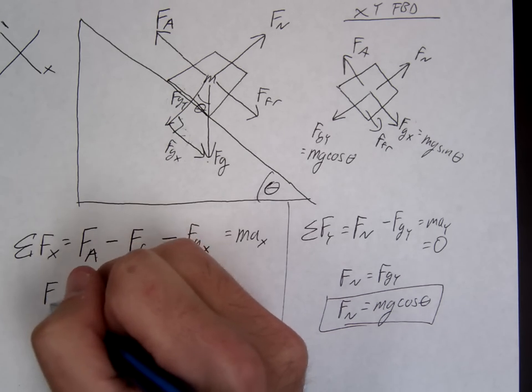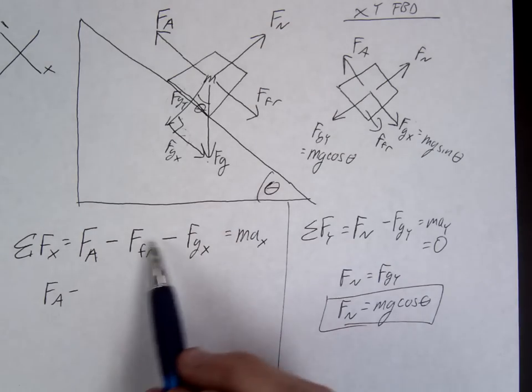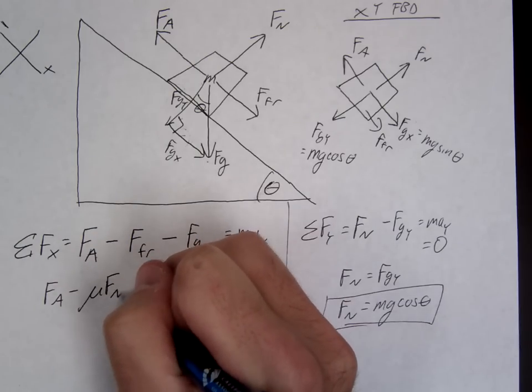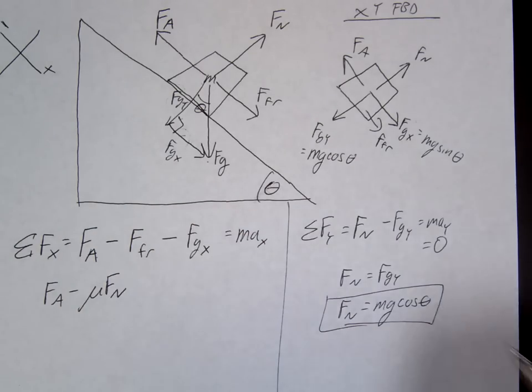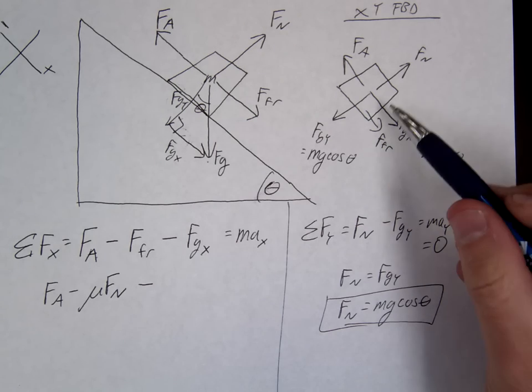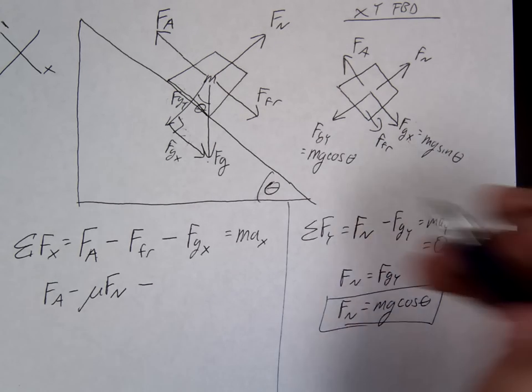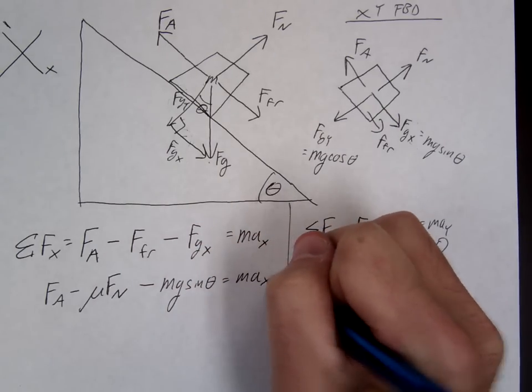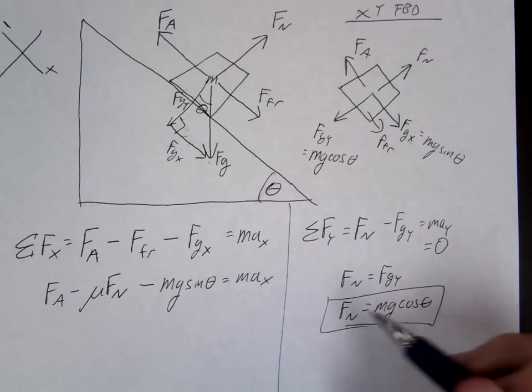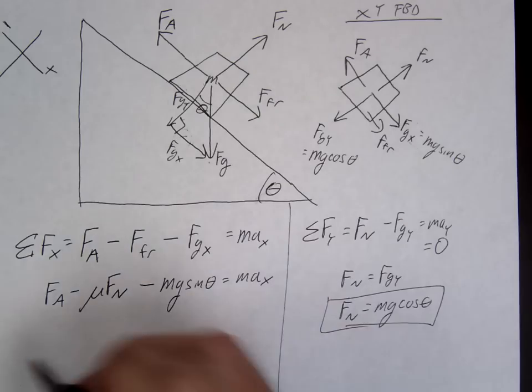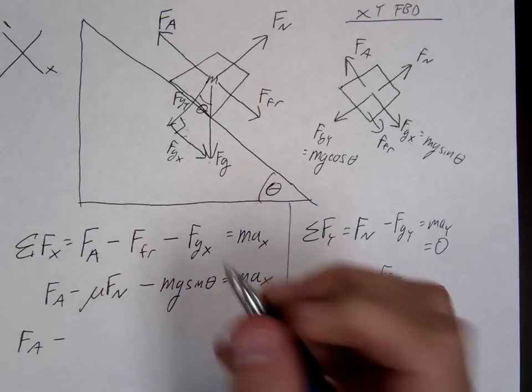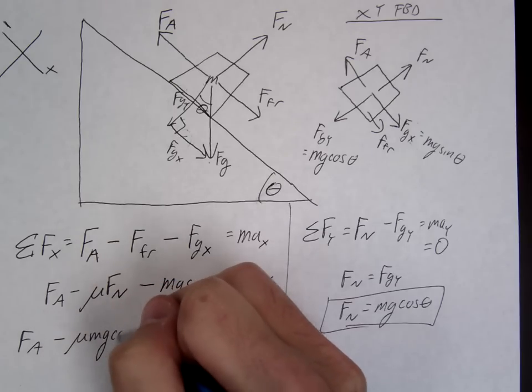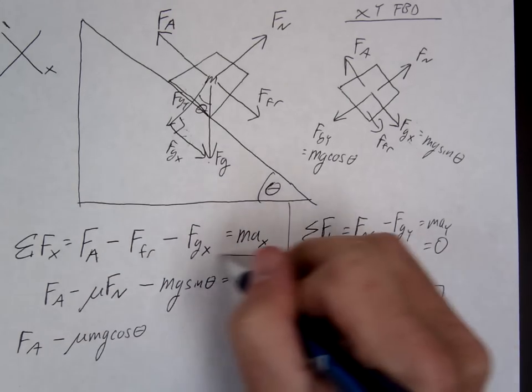Same thing here. So, FA. Let's just start substituting. What's our equation for friction? Mu times FN. And, FGX is right here. And, then we'll go ahead and substitute for the normal force, right? So, I'm substituting this into here.